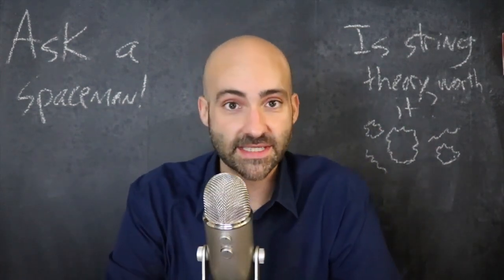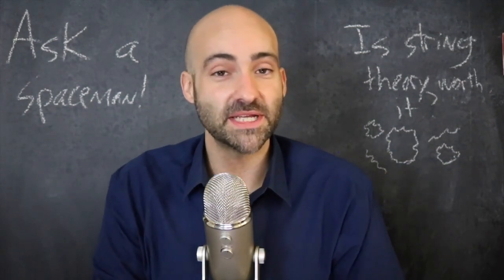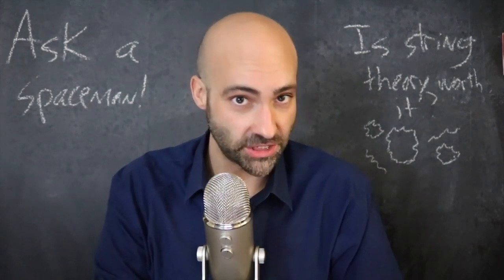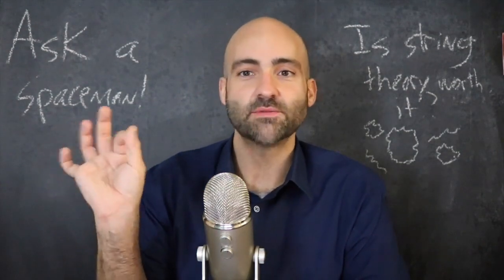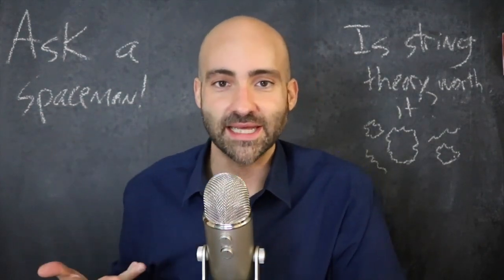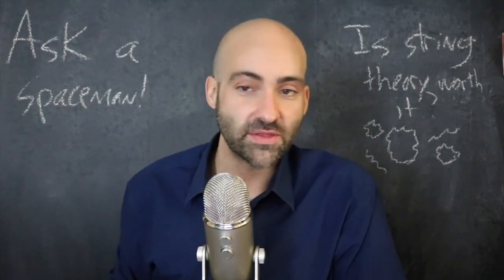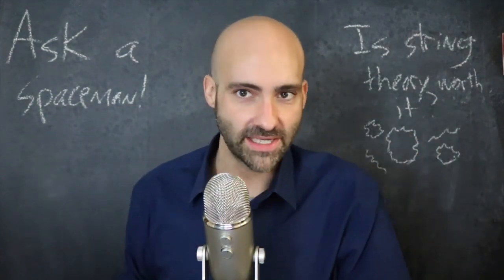In order to make the math work in this 1960s version of string theory, there needed to be 26 dimensions. That's what they needed - that was the amount of room that these strings needed to actually do their stringy thing and for all the math to line up.